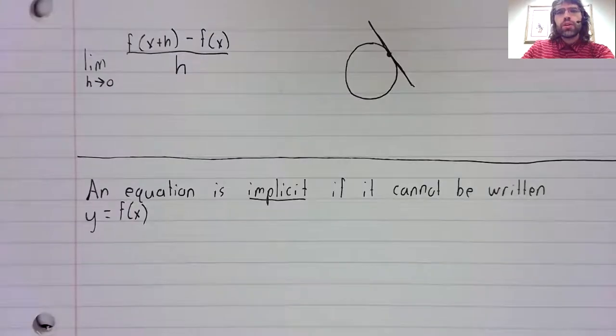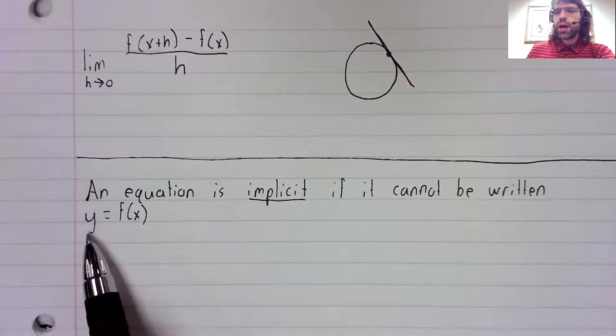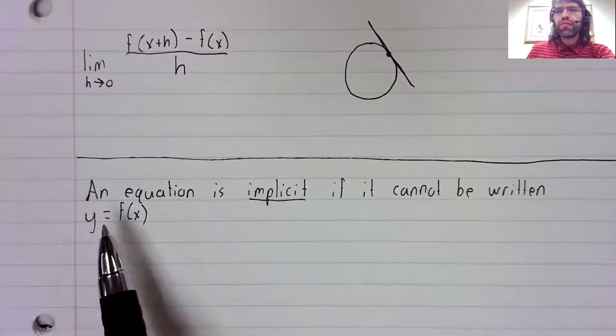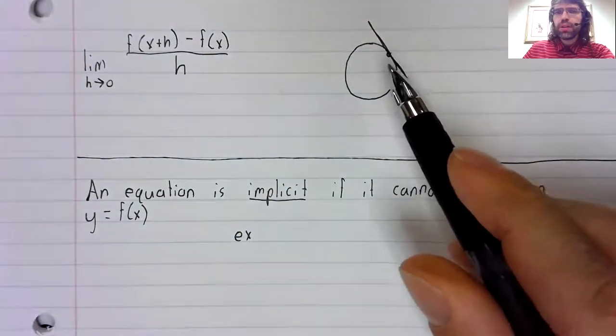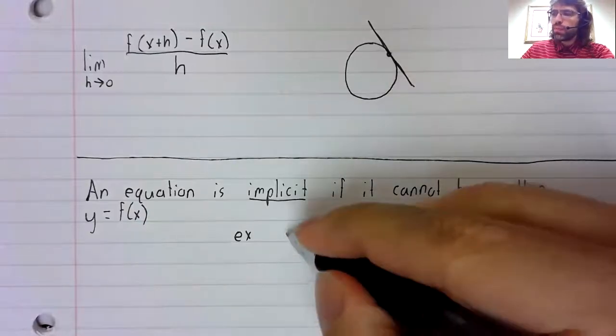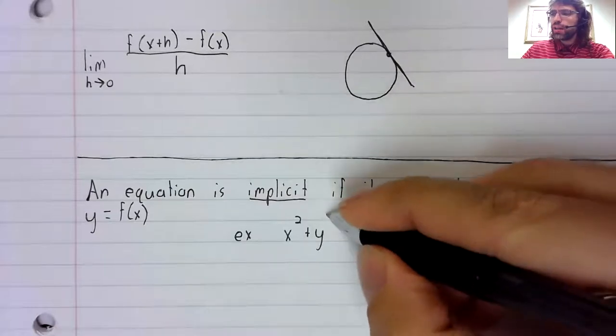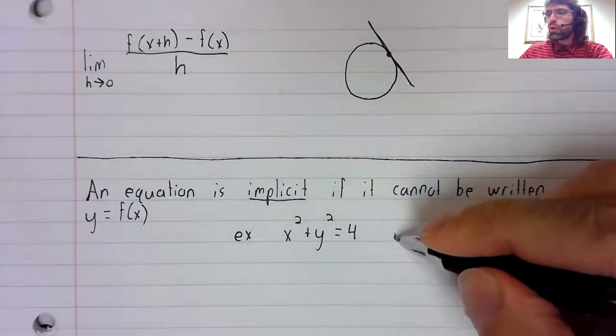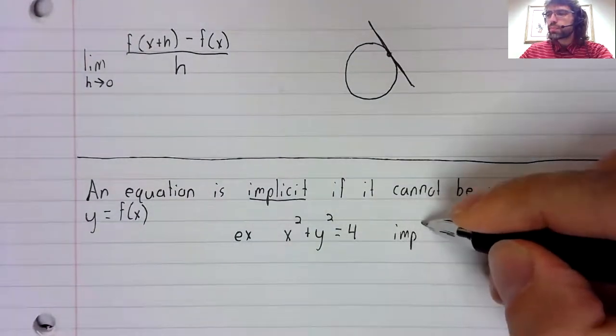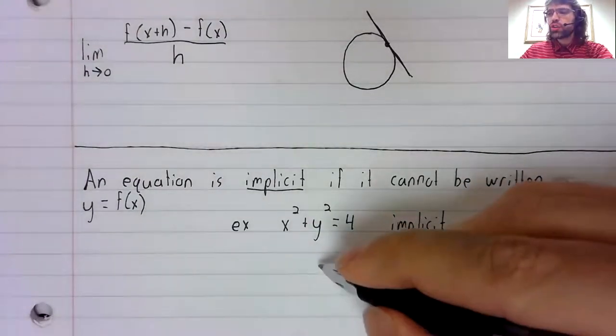An equation is said to be implicit if you can't rewrite it as y equals f of x. So for example, keeping with the idea of a circle, x squared plus y squared equals four.